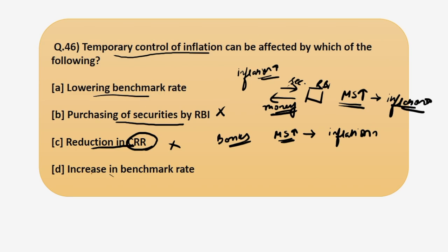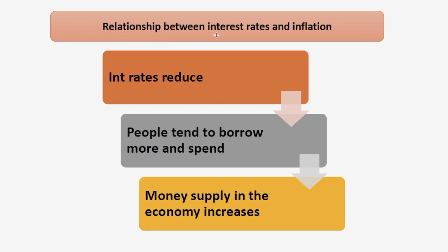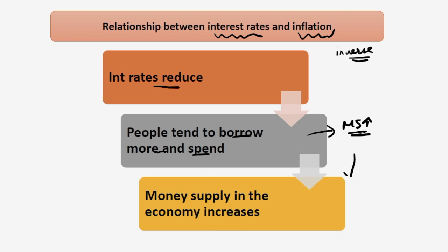Reduction in CRR will increase inflation, so it is also not the correct answer since we have to find a solution to control inflation. Now we shall be discussing the remaining two options: lowering the benchmark rate and increase in the benchmark rate. You must know the relationship between interest rates and inflation. There is an inverse relationship: when interest rates are reduced, loans become cheaper and therefore it induces people to borrow more and spend, which increases money supply and as a result inflation will also rise.